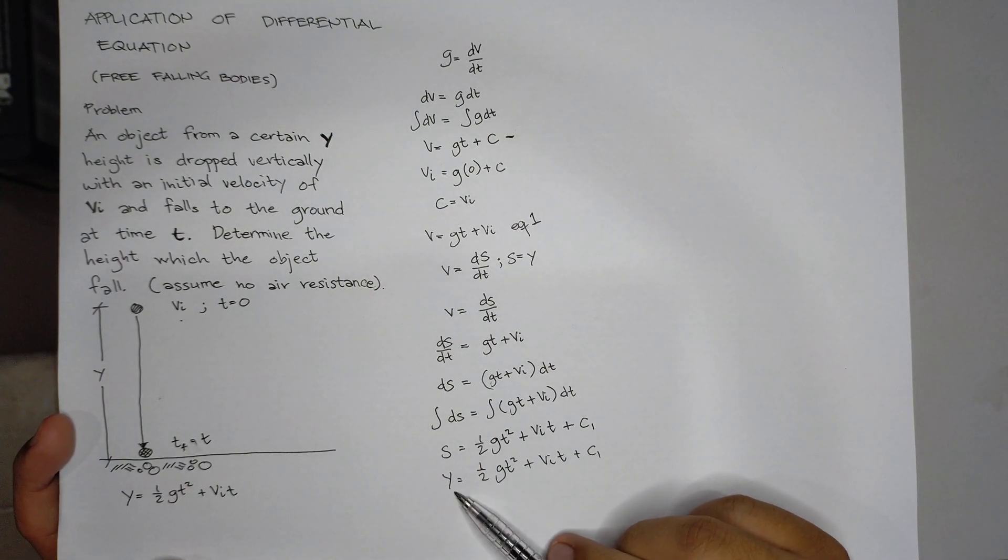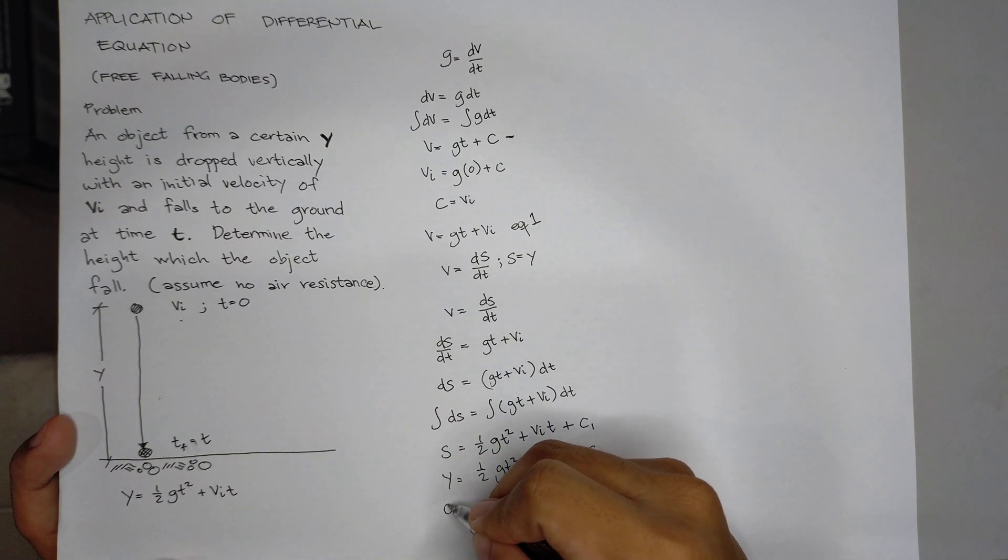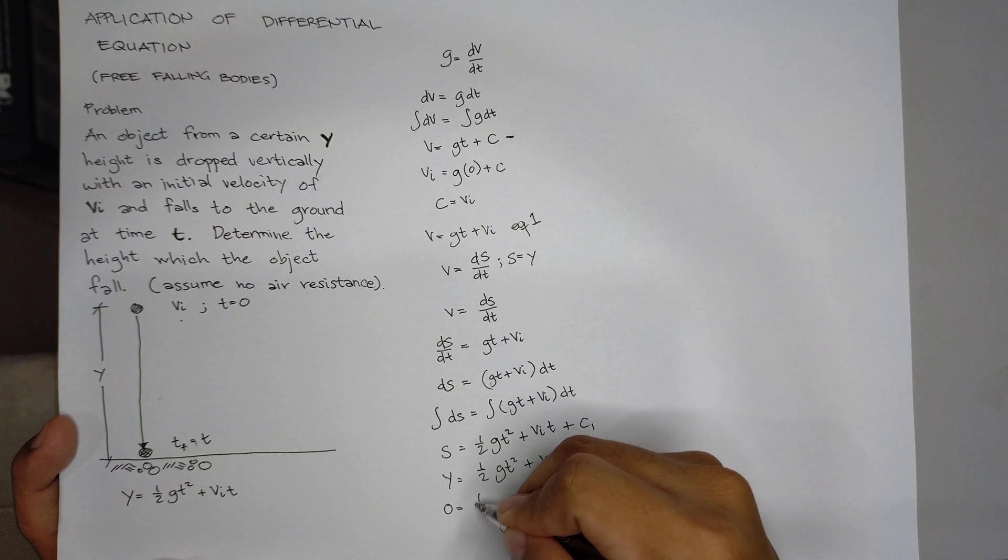So when height y is 0, t is 0. Therefore, when y is 0, time is 0. Substitute all the y's and t's from the equation.